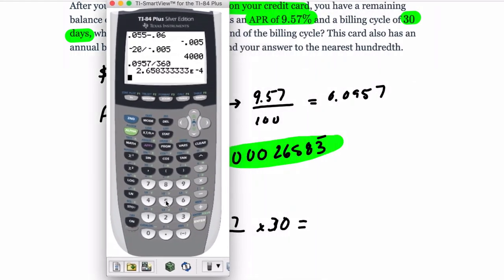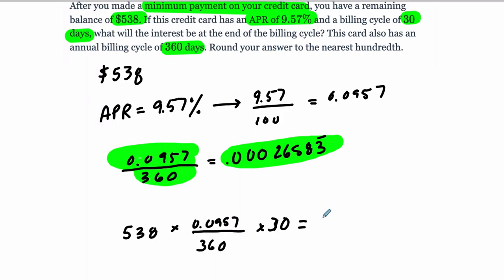Let's do that. We do $538 - now we already have that number entered on our calculator, so I'm going to press times, second answer, that's the previous number, times 30. And that's it: 4.29055. To the nearest hundredth, it's 4.29. That's $4 and 29 cents.